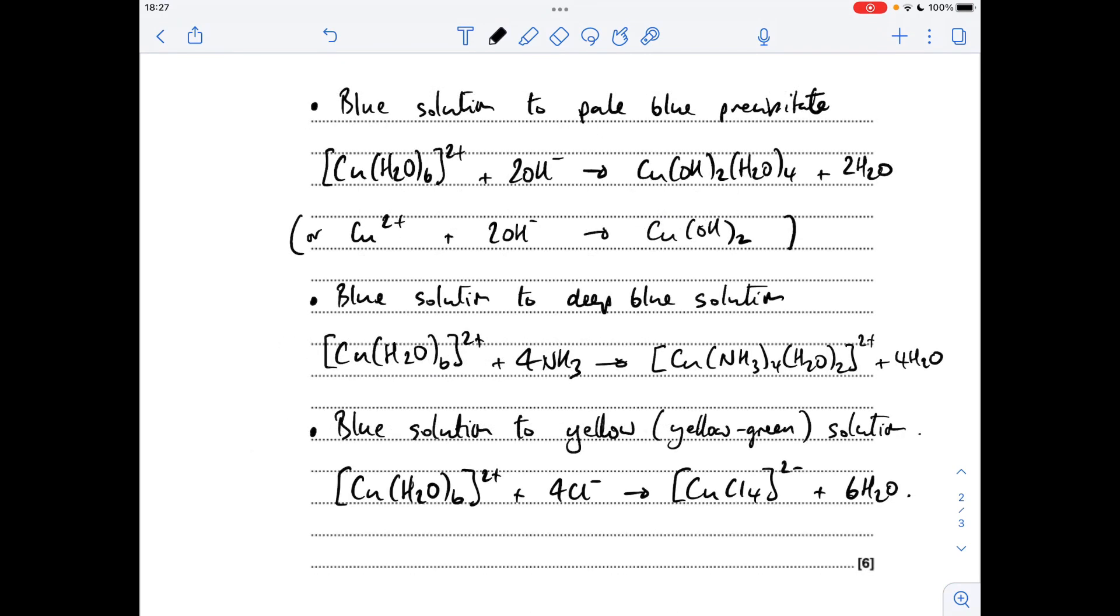And finally for part 2, I had to give the observations and the equations for these three reactions of aqueous copper 2 plus ions. Now all of them would start out with the hexa-aqua copper 2 ion, because that's what you've got in aqueous copper 2 solutions. So the first one, you'd go from a blue solution, which is due to this complex ion, to a pale blue precipitate of copper 2 hydroxide. So you can either give this a more complicated version of the equation, or you could just go for this simple version.